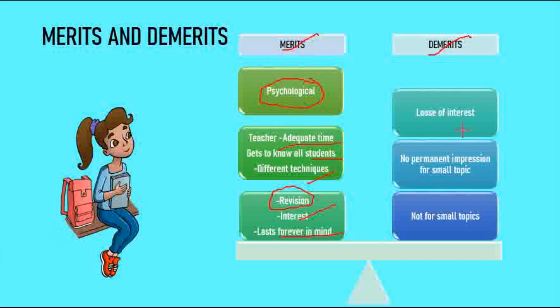Coming to the demerits: Since it is too long and every year you are studying the same concept in the same chapter, just more advanced, children have a chance to lose interest. It may fail to create a permanent impression, especially for small topics.